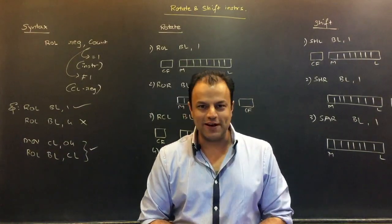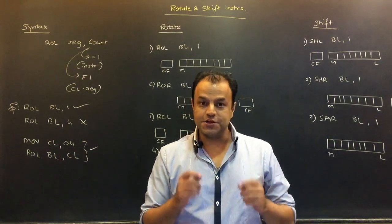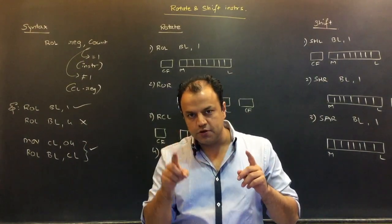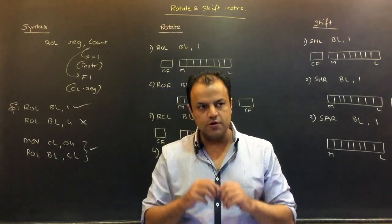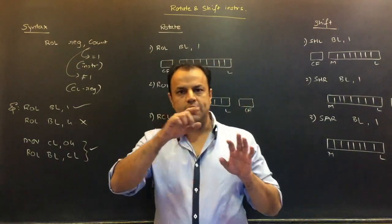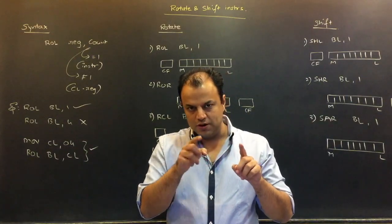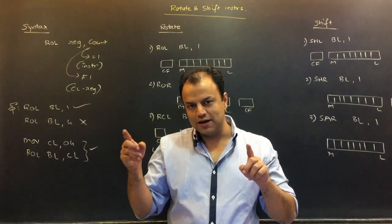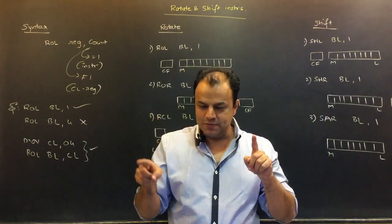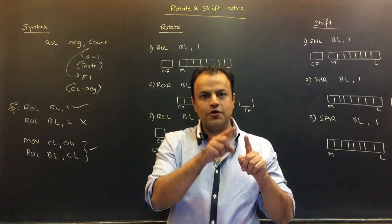The moment I say the word rotate, what comes to your mind — a line or a circle? A circle. And a shift? A line. That's it. Rotate is a circular movement; shift is a horizontal movement. Suppose I take an 8-bit register and rotate it left — each bit goes one position to the left. What happens to the last bit? It doesn't fall down; it comes back to the first position. When the last bit comes back to the first, you've formed a full circle. This is called a rotate.